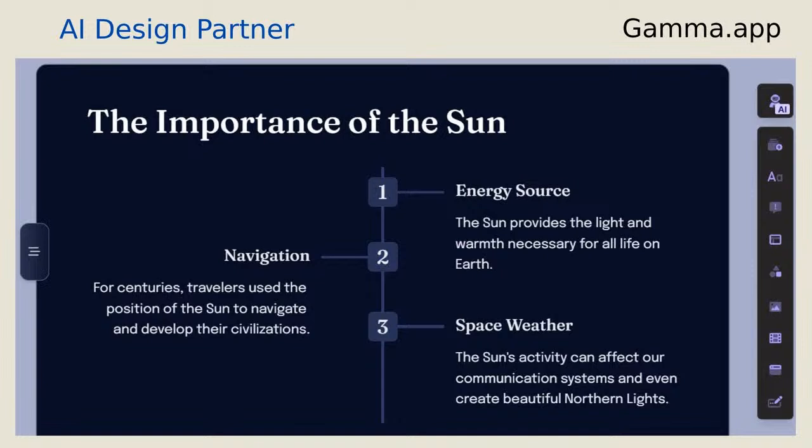I want to draw your attention to something cool here. In the top right corner you see the word 'AI' — they call it the AI design partner. I found this on one of the slides generated when I asked Gamma to produce slides for the solar system topic. I noticed this particular slide had no images, and I'd love to have images on almost every slide.